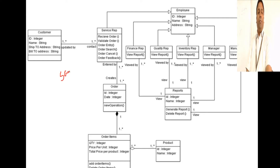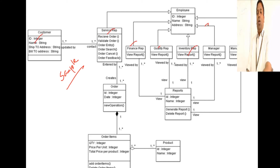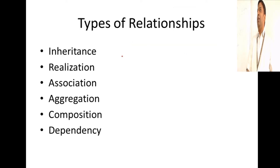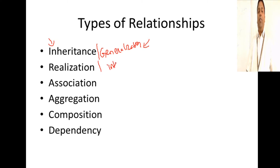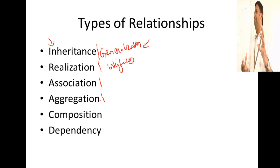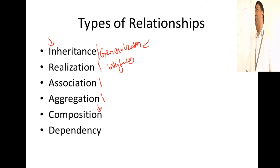I'm showing you a sample diagram here for your understanding. You have to identify all the classes and then relate them. The types of relationships between classes are a pure object-oriented programming concept. Inheritance, also called generalization in UML, represents inner relationships. Realization is for implementing interfaces. Association is linking two classes to each other. Aggregation is one class containing or holding the object of another class. Composition is a stronger form of aggregation. Dependency is one class being dependent on another for its implementation.